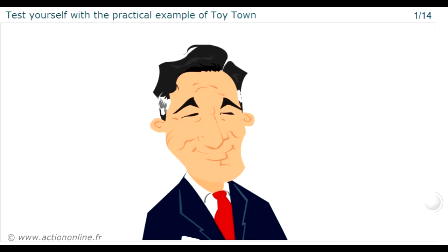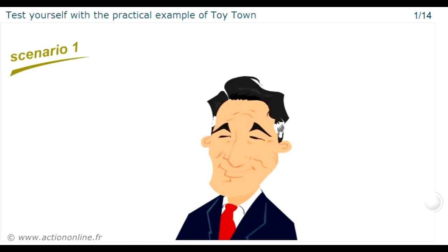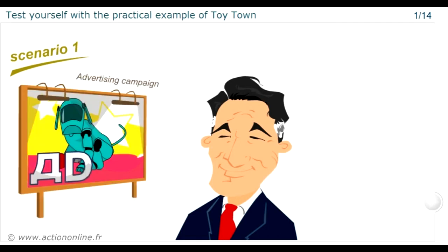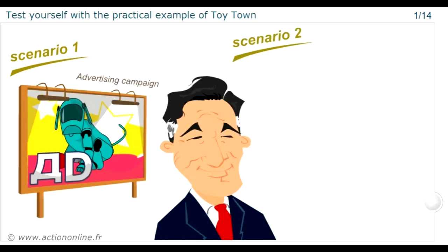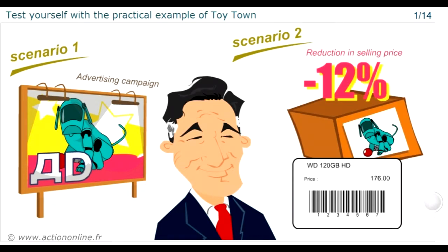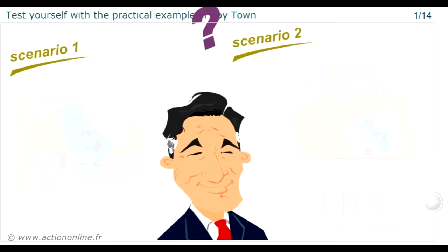There are two main options. Firstly, the company could commission an advertising campaign. Secondly, the company could reduce its product's unit selling price by 12% to increase the volume of sales. A crucial question arises: what will happen if the company takes one or other of these options?